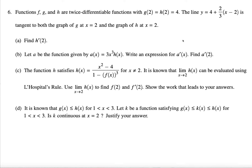Number 6 from the year 2019. Number 6: f, g, h are twice differentiable functions, meaning you are able to take the derivative at least twice. And g of 2 and h of 2 is equal to 4.